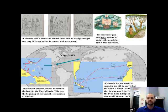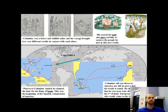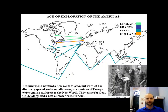Columbus did not discover America, nor did he prove that the world is round. He thought that he was near Asia, and he was the first of many European explorers who would come to the Americas — that's why he's important. By this point, people already believed that the Earth was round, and Columbus's calculations reflected that. But he thought that the Earth was a little bit smaller, and he did not have a map that showed North and South America.